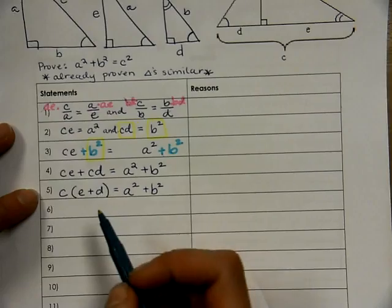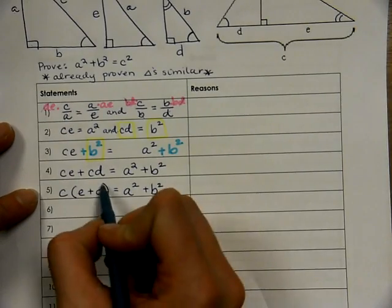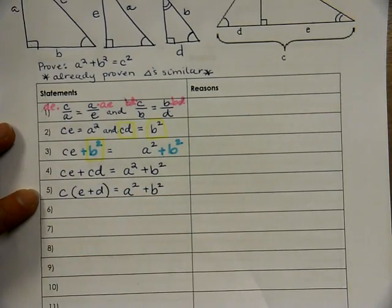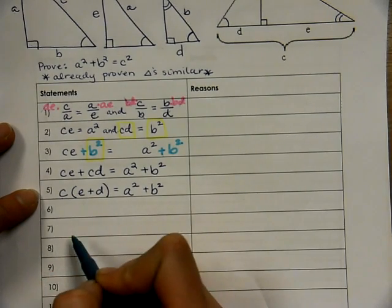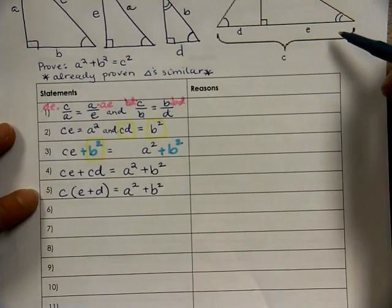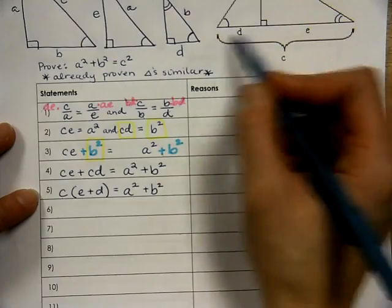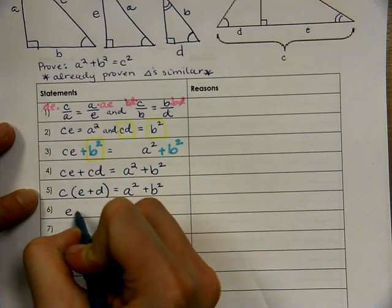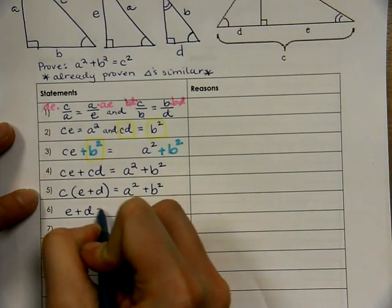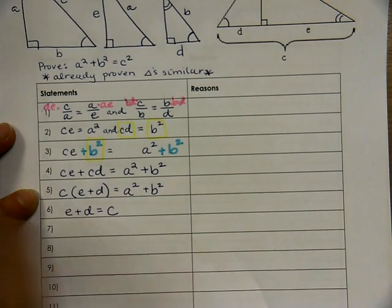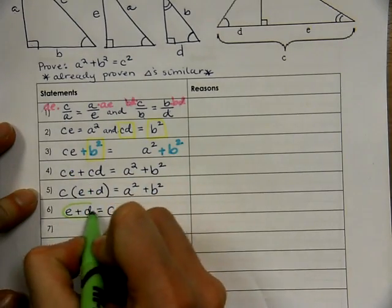Now, we are thinking, well, how can we get this to be C squared? We know C squared is really just C times C. So, is E plus D equal to C? Because if it is, then this side would be C times C or C squared. And in fact, when we look at our picture up here, we find out that it is equal to C. So, we know that segment addition postulate says E plus D is equal to C. And now, we can substitute C in for ED.